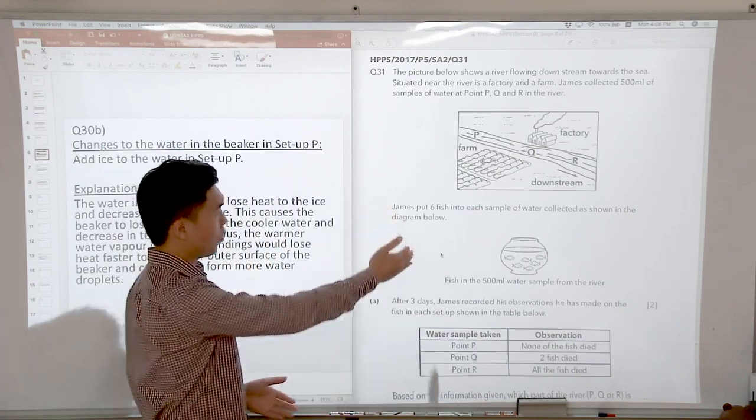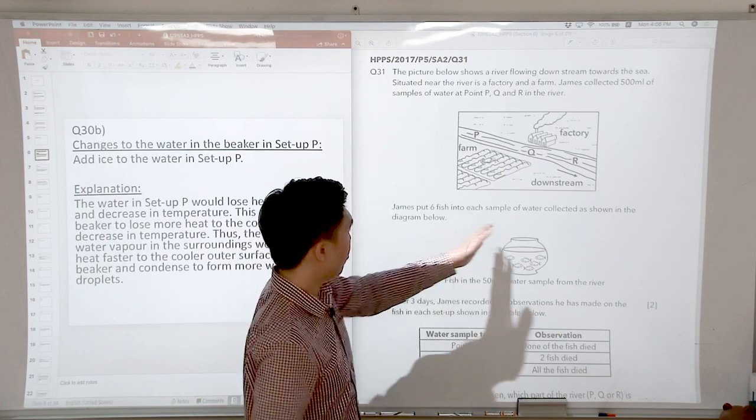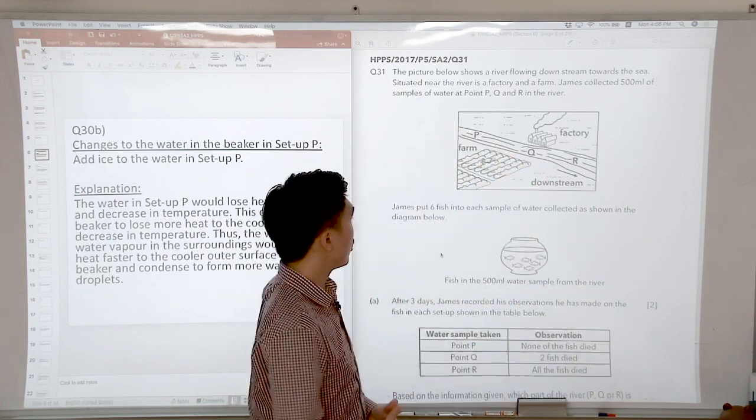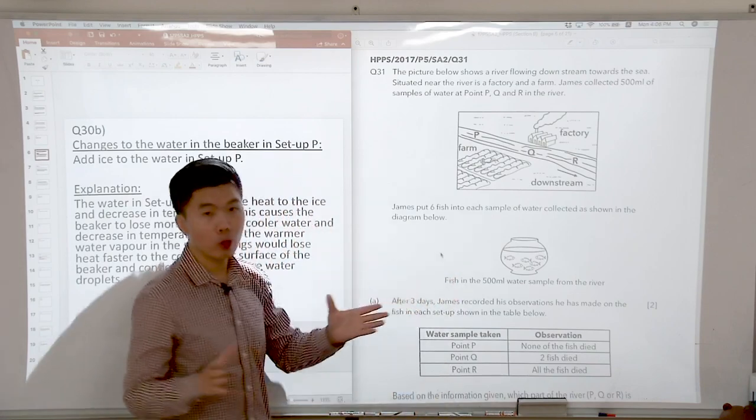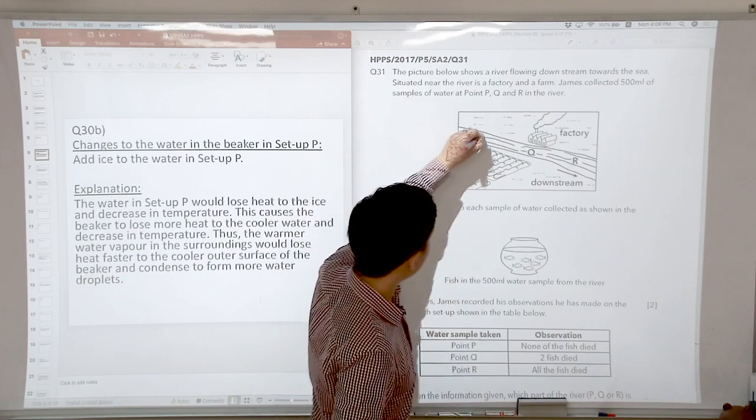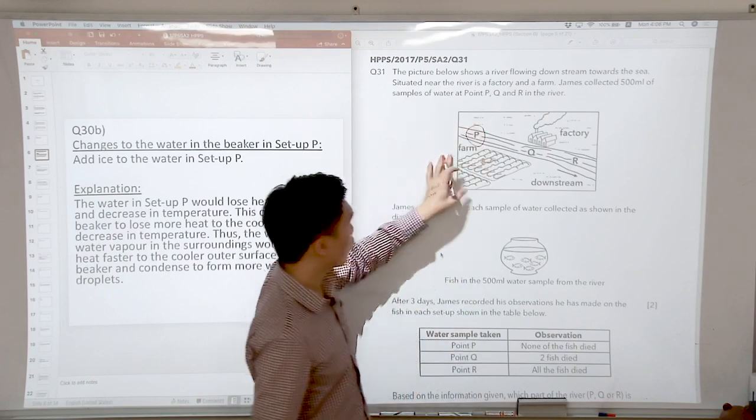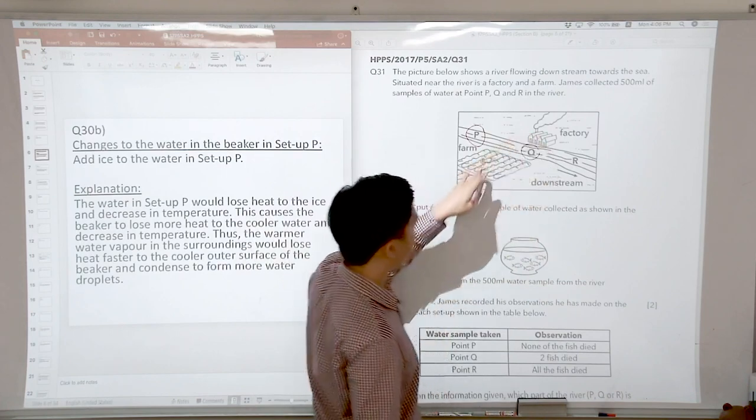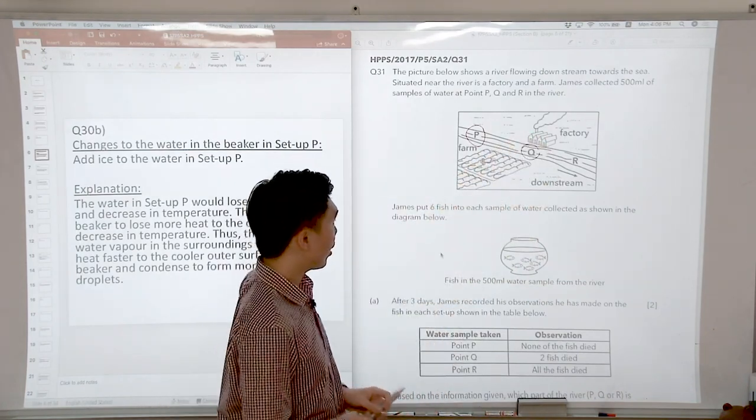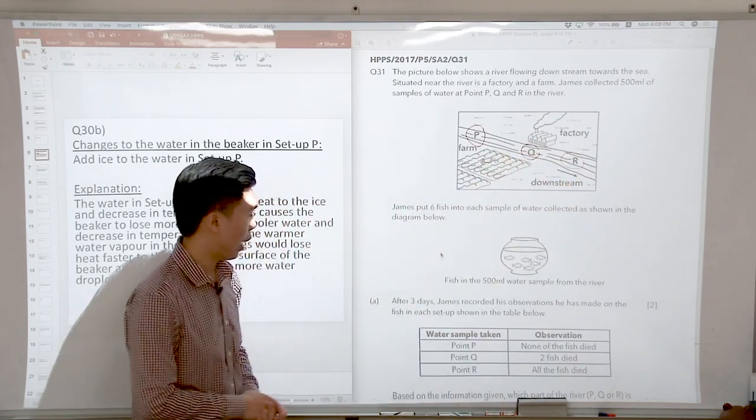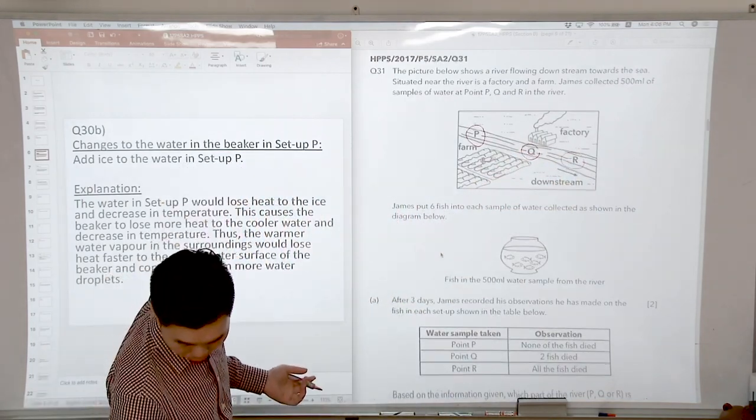So James put 6 fish into each sample of the water that is collected at P, Q and R. So we must take note of the direction of the river flow. It is flowing downstream. So if you look at P, it has yet to pass through the farm and the factory. So Q is where the farm and the factory is placed at and then R is the water after the farm and the factory. Let us look at the information given.